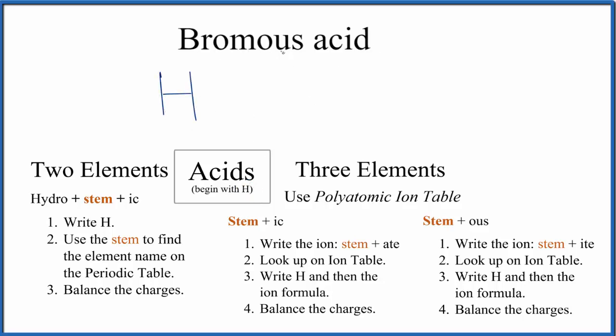Next, when we look at the name bromous acid, there's no prefix. There's nothing in front of it, so we don't have hydro in front of our bromous acid. That means we're gonna have more than two elements. We're gonna have three elements in our formula here for bromous acid, and that will involve a polyatomic ion.